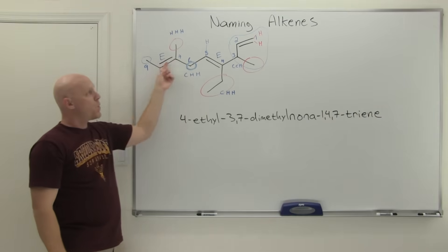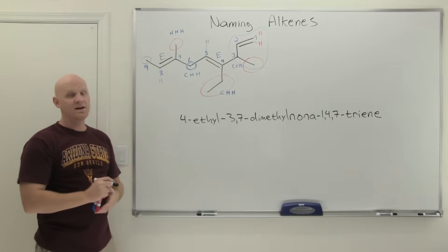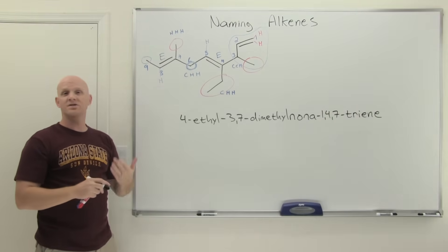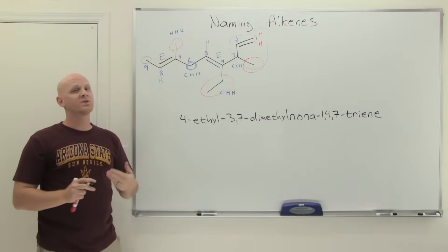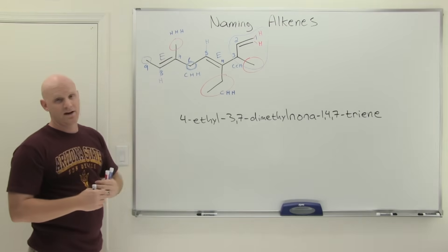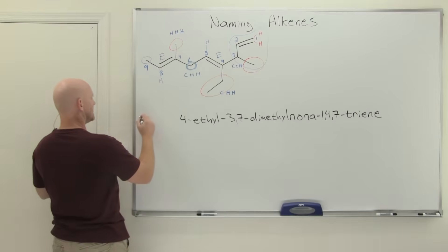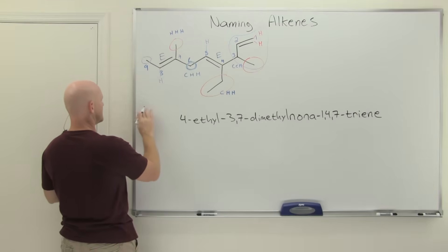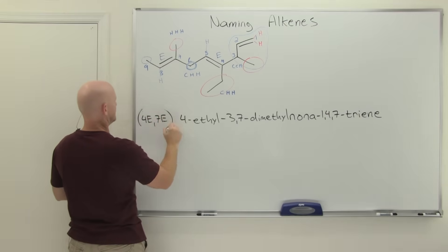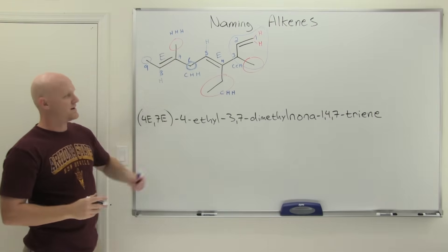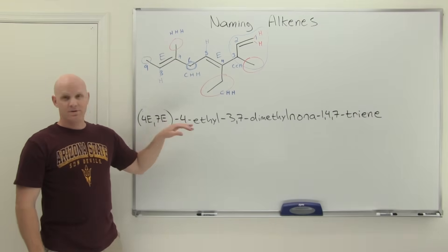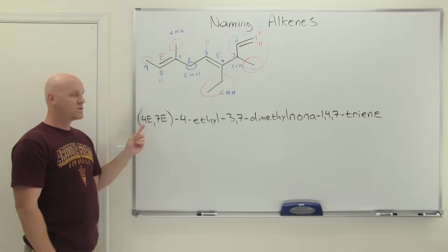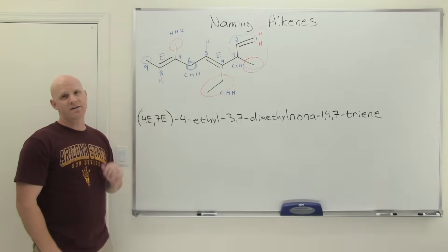When you have more than one alkene that needs a stereochemical designation — just like with R and S — if you only have one, you just say E or Z. But the moment you have more than one, you must give locations as well. Just saying EE at the beginning is not sufficient; you have to specify in parentheses: (4E,7E). So the complete name is (4E,7E)-4-ethyl-3,7-dimethyl-nona-1,4,7-triene. It's a mouthful, but that's how we name polyalkenes.